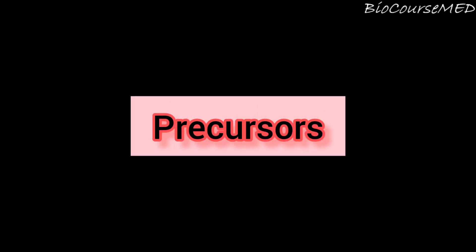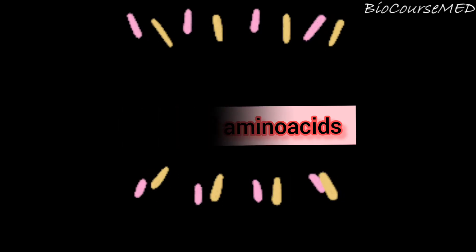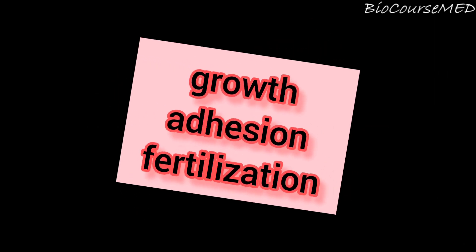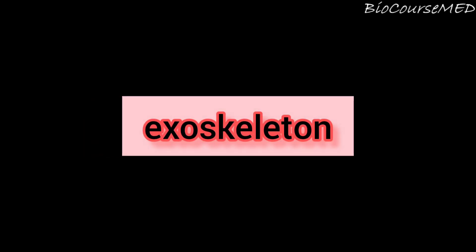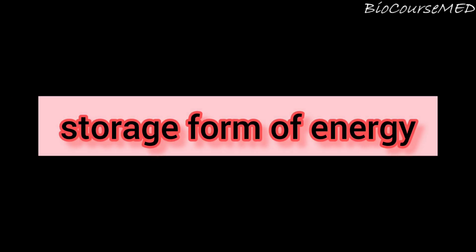Talking about the functions of carbohydrates: they are the most abundant dietary source of energy for all organisms. Carbohydrates are precursors for many organic compounds such as fats and amino acids. Carbohydrates also participate in the structure of cell membranes and cellular functions such as cell growth, adhesion, and fertilization. They are the structural component of many organisms, including the fiber of plants, the exoskeleton of some insects, and the cell wall of microorganisms. Carbohydrates also serve as a storage form of energy to meet the immediate energy demands of the body.